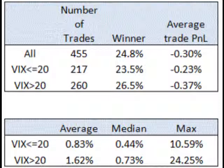The average trade PNL, however, does not tell the whole story. We next look at the maximum favorable excursion, or MFE. A table on our website summarizes the results. Despite the fact that the short SPY trade has a negative expectancy, both the average and median MFEs are positive. This means that the short SPY trades often have large unrealized gains before they are exited at the close. Also, as volatility increases, the average, median, and largest MFEs all increase.